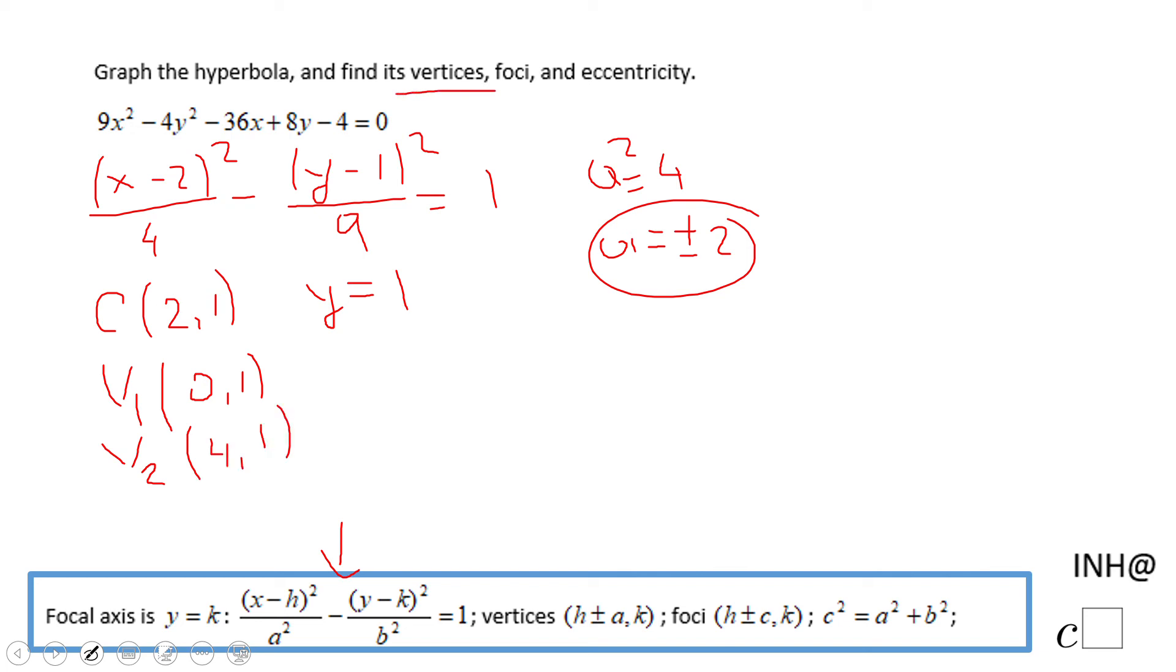For the foci, we're going to need to do c², which is a² + b², so in this case 9 + 4, which is 13. So c is going to be plus or minus square root of 13.